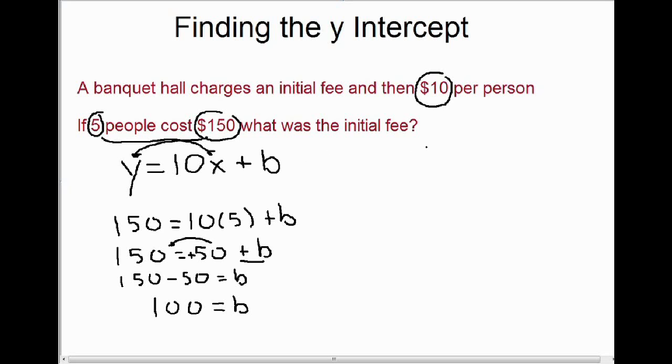So here we were given the slope. We were given the rate of change. And we were given an ordered pair, a pair of values, a y value and an x value, that we could substitute into our equation to find out what the initial cost was. And in this case, the initial cost was $100.